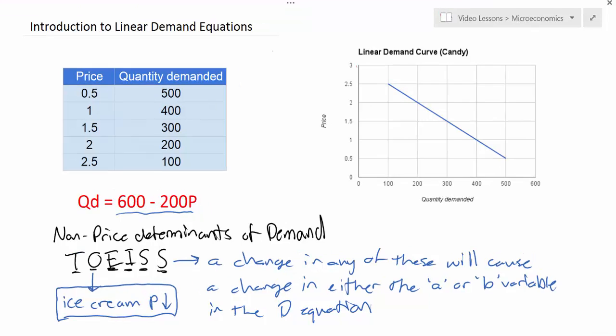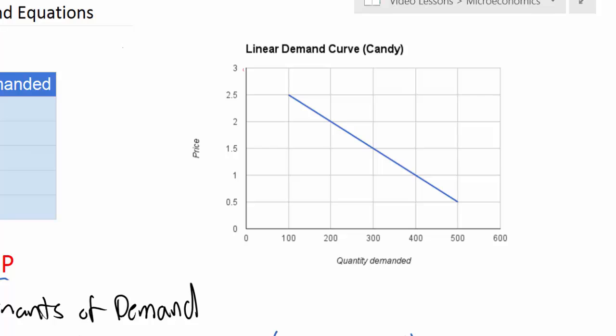As the price of ice cream falls, we would expect the demand for candy to decrease. In other words, shift to the left. Let's draw a new demand curve to the left of the original demand curve, not changing the slope itself, but rather just the location of the curve on a graph.